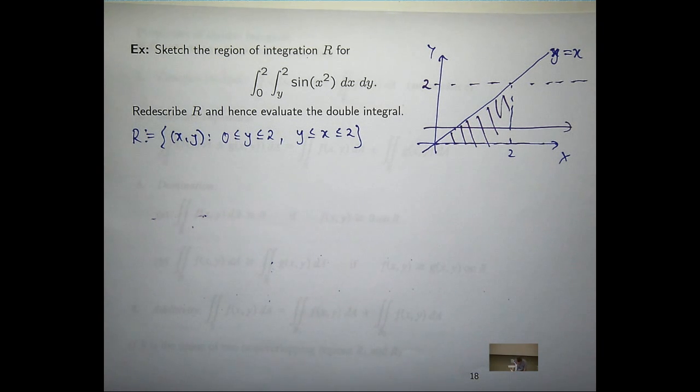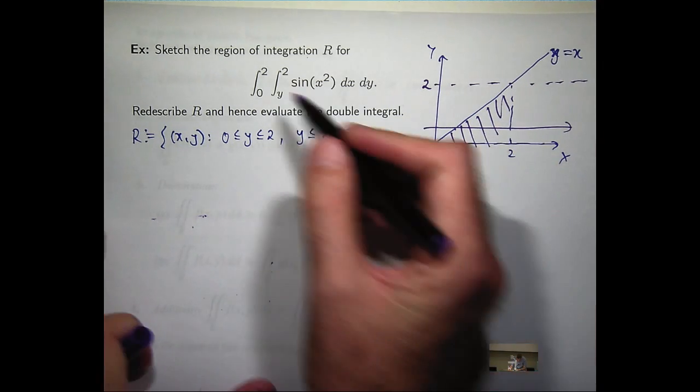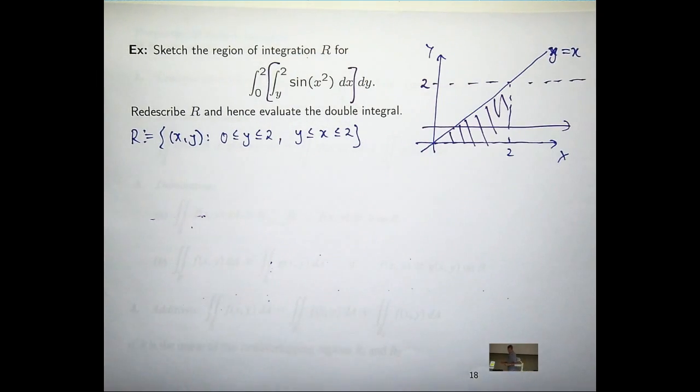But hang on, I've sort of forgotten something here. I've done what they've asked me to do. I've sketched the region of integration. Why don't I just integrate it? Why can't I just integrate that?